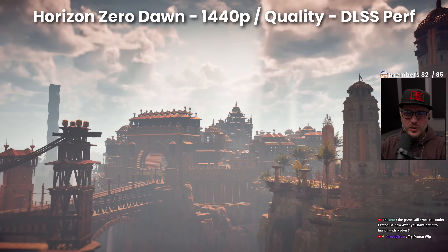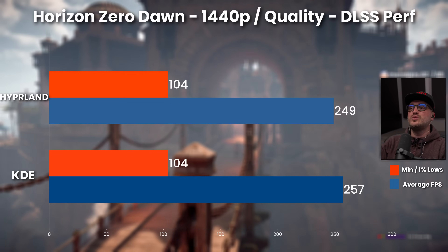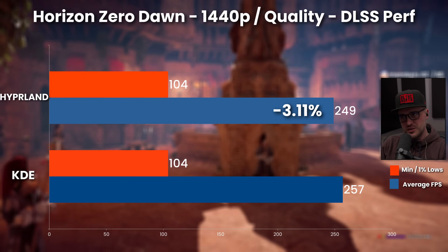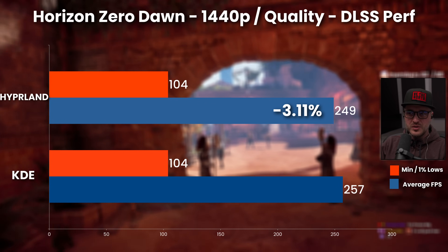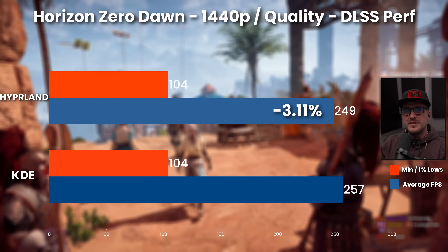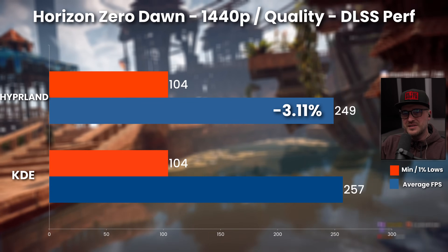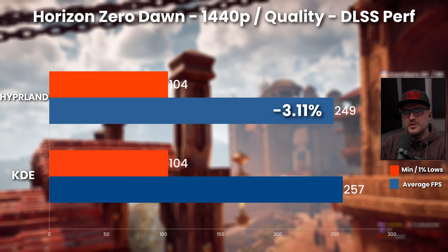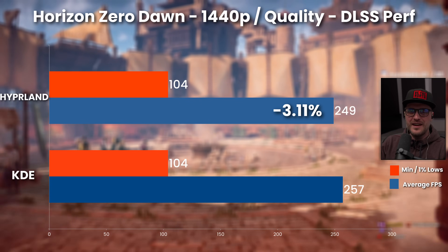Horizon Zero Dawn: 257 FPS average on KDE versus 249 on Hyprland — around minus 3.1% for Hyprland. Regarding the minimum, we have the same — 104 FPS on both desktop environments. Hyprland is again behind at 3%, which we could consider margin of error. But I noticed that on this game it's pretty accurate — each time I did some tests, there wasn't much of a difference. So again, another loss for Hyprland.